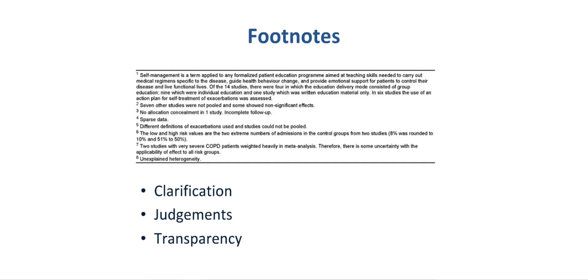A critical part of the Summary of Findings table are the footnotes. They provide clarifications and explanations for the judgments that have been made. It therefore enhances transparency related to the summary of findings tables and the systematic review.